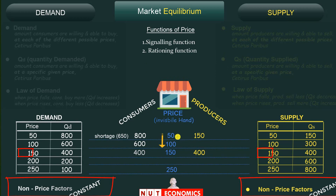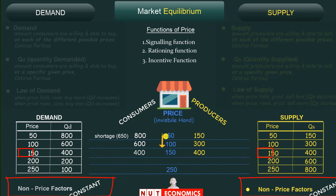As price increases from 50 to 100, profitability for producers increases — since all non-price factors are constant, more price means more profit. This rising price gives producers an incentive to increase quantity supplied to 300 at the higher price of 100. So the three main functions of price are: the signaling function, the rationing function, and the incentive function.